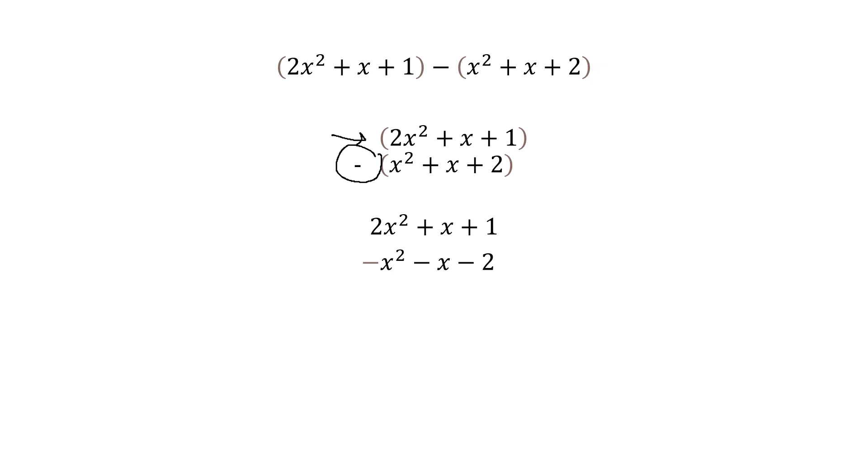The top one, there's nothing outside. So nothing changes in that one. The bottom one has a negative outside of it. So the sign of everything changes. And now we're just going to work down again, 2x squared minus x squared is 1x squared. x minus x is zero. It goes away. I can write plus a zero, but I don't need to.